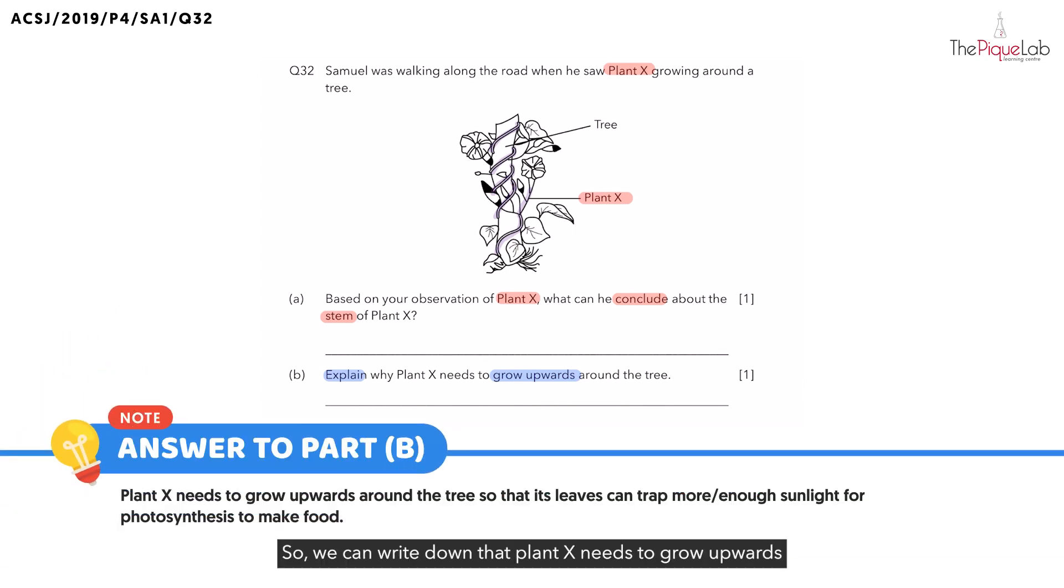So, we can write down that plant X needs to grow upwards around the tree so that its leaves can trap more, or we can also write enough sunlight for photosynthesis to make food.